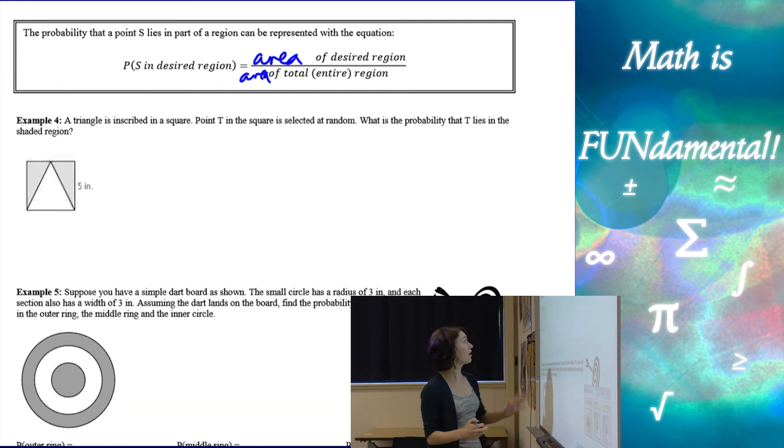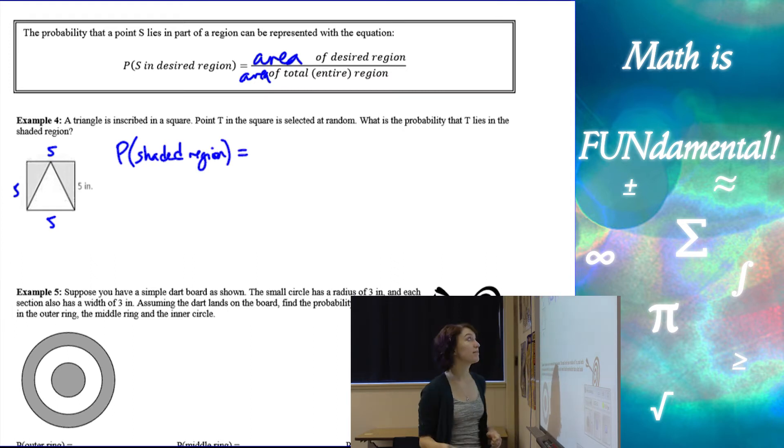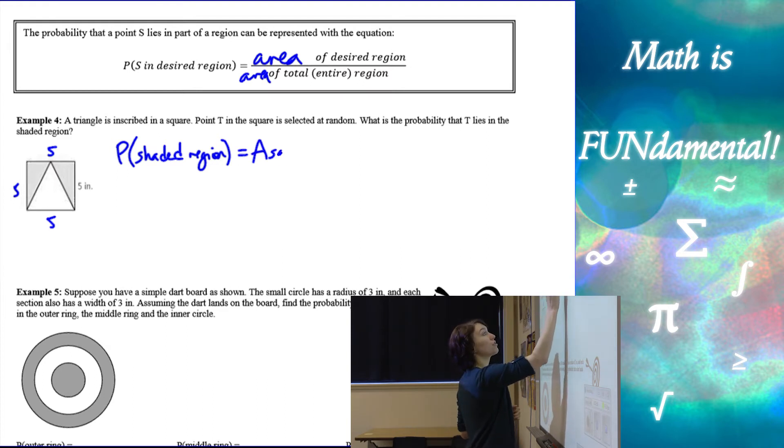Alright, so let's look at two examples here. First one says a triangle is inscribed in a square. So I know if it's a square all four sides are the same. Point T in the square is selected at random. What's the probability that it lies in the shaded region? So probability of our shaded region of our point lying in our shaded region is going to be the area of the square, area of the square,